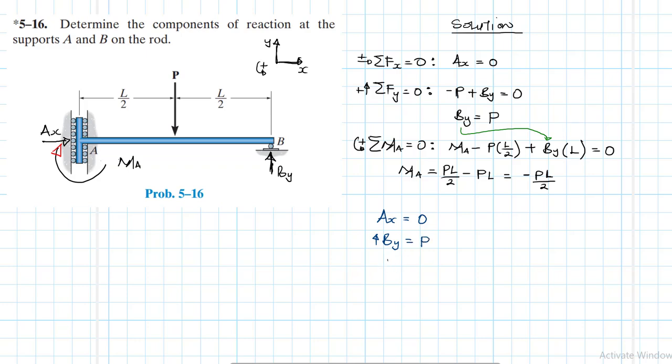And then we have MA. This one is clockwise. This one is clockwise. This one is equal to P L over two.